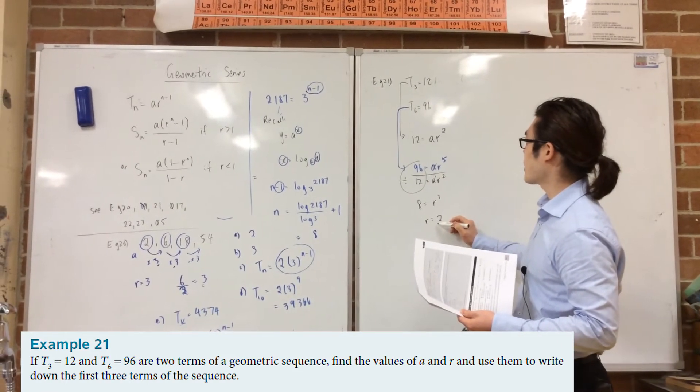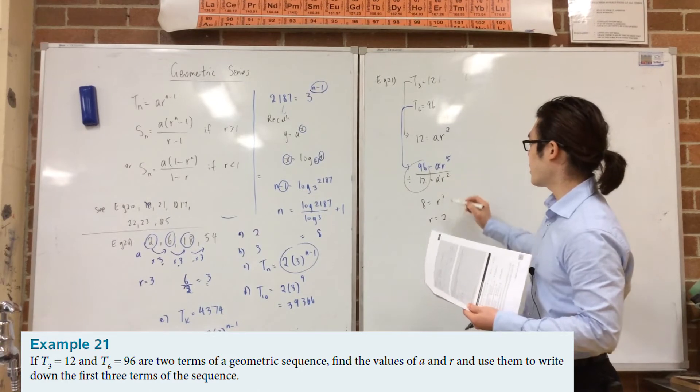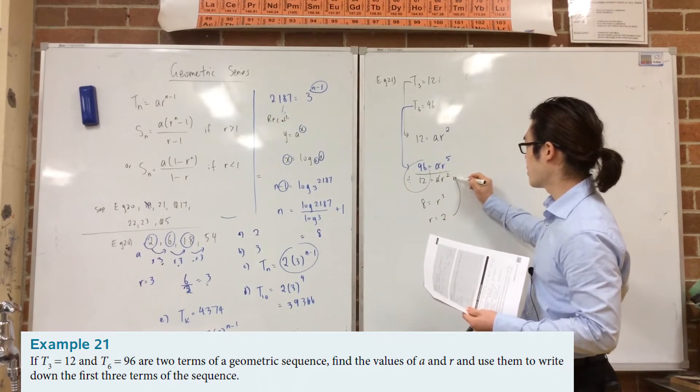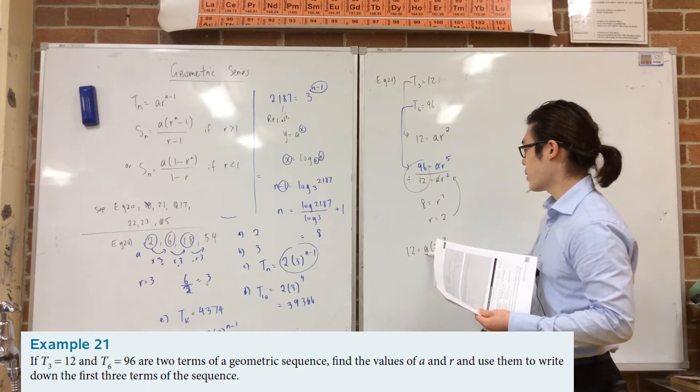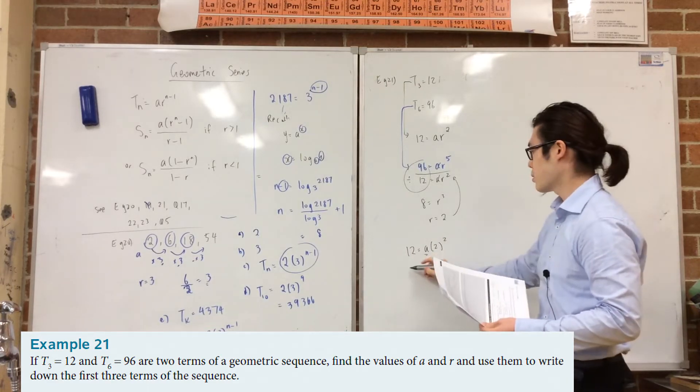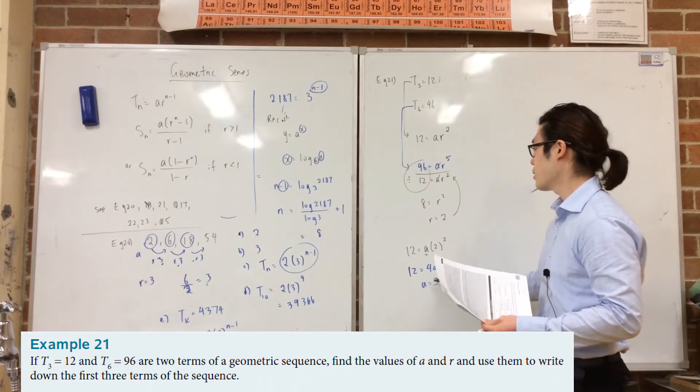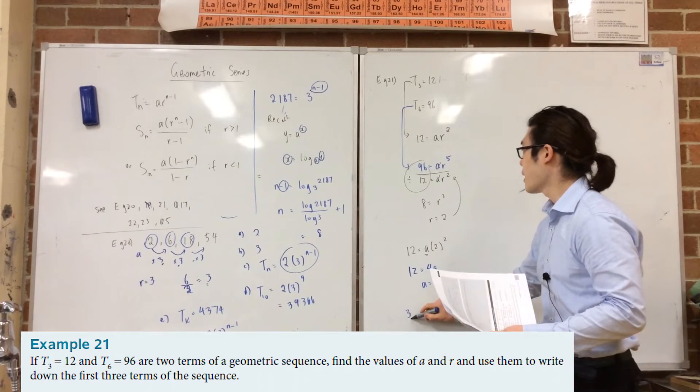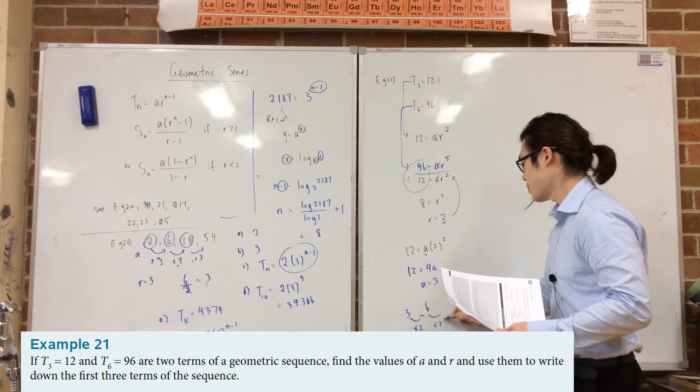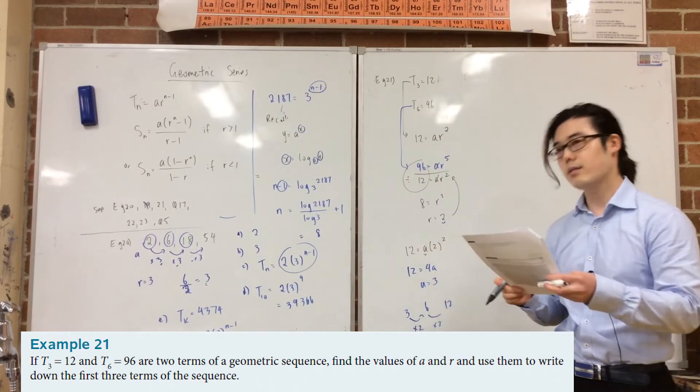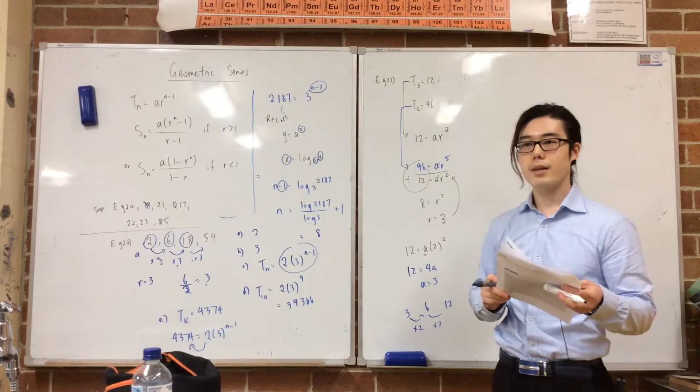So using that, now we can plug it back in either of these. So let's plug it back in here. So 12 is equal to a times 2 squared. And then we can figure out a from there. So this is just 12 is equal to 4a, a is equal to 3. So the first term is 3. And then it goes up by multiply of 2, which is 6. And then times by 2 again. So those are your three terms. Pretty straightforward.